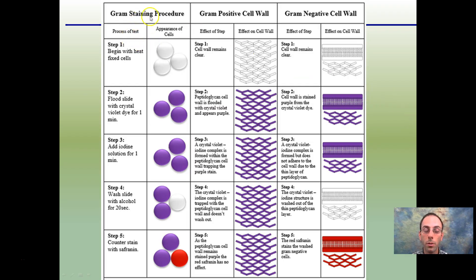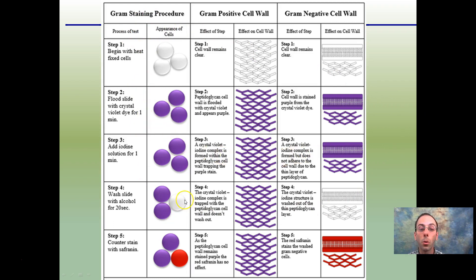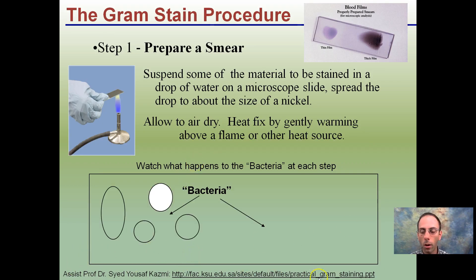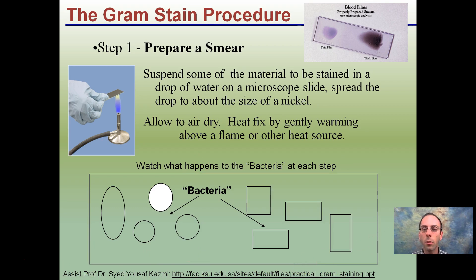Here's another example of the gram staining procedure and what things are going to look like. We're looking at basically making our bacteria cells either purple or red. I got this procedure online and made some modifications myself, but you always want to be careful to cite your sources.